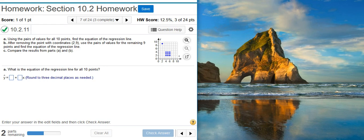Here's our problem statement. Using the pair of values for all ten points, find the equation of the regression line. After removing the point with coordinates, use the pairs of values for the remaining nine points and find the equation of the regression line. Compare the results from parts A and B.